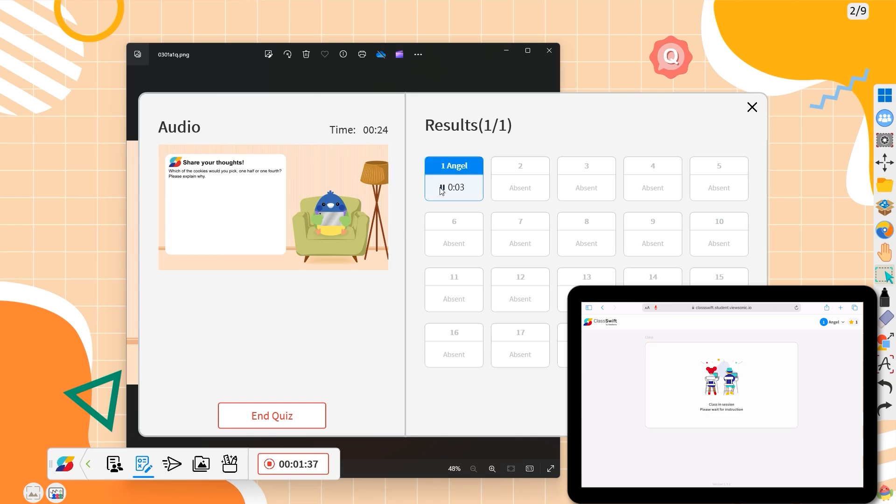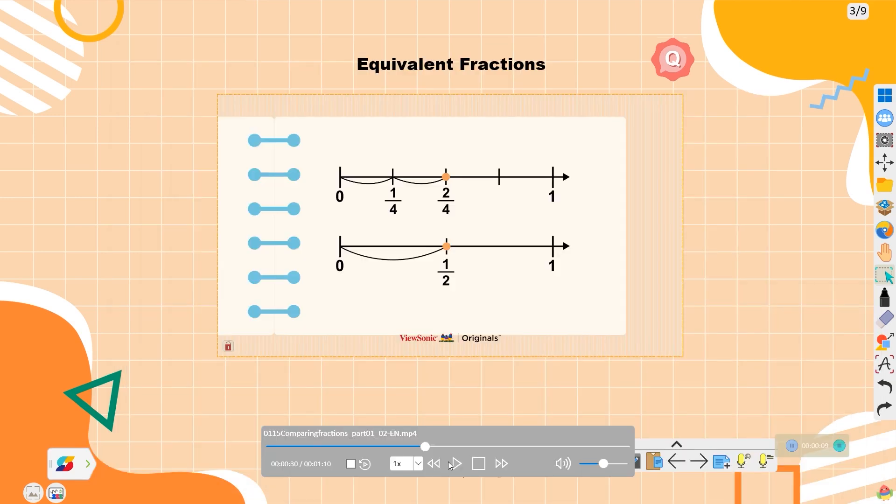I want one-half of the cookie because it's larger. Now, let's move on to equivalent fractions. Watch an Originals animation.